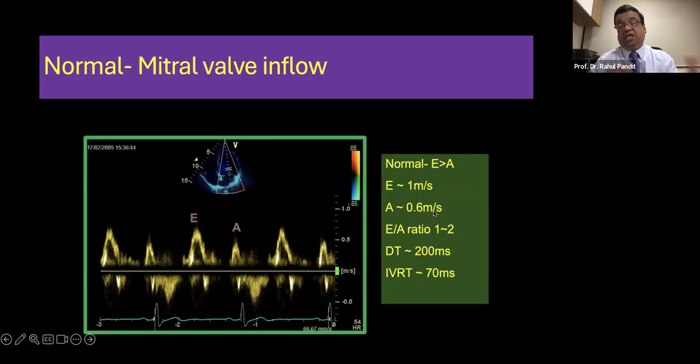So you have 1 millisecond over 0.6. So EA ratio is around 1 is to 2. Deceleration time and isovolumetric relaxation time around 200 milliseconds and around 70 milliseconds. So deceleration time is the time it takes to decelerate from the peak to the bottom and that's around 200 milliseconds and IVRT is around 70 milliseconds.